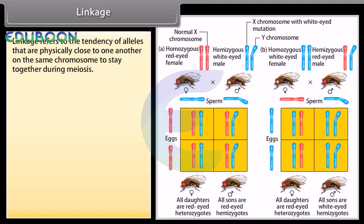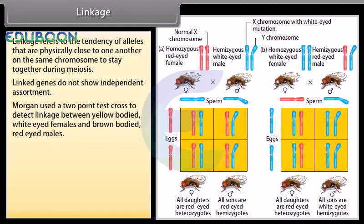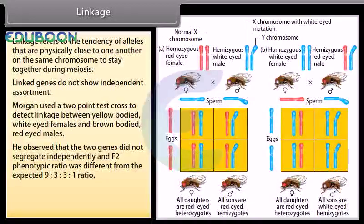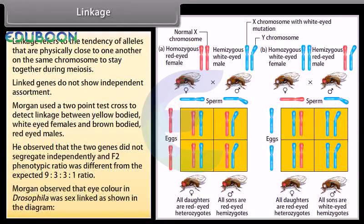Linkage refers to the tendency of alleles that are physically close to one another on the same chromosome to stay together during meiosis. Linked genes do not show independent assortment. Morgan used a two-point test cross to detect linkage between yellow-bodied white-eyed females and brown-bodied red-eyed males. He observed that the two genes did not segregate independently, and the F2 phenotypic ratio was different from the expected 9:3:3:1 ratio. Morgan observed that eye color in Drosophila was sex-linked, as shown in the diagram.